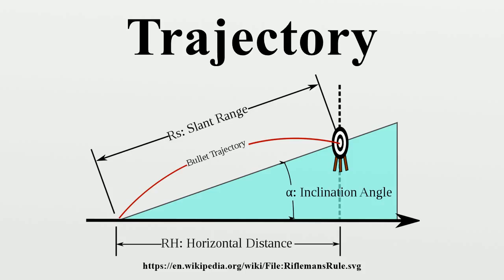A trajectory can be described mathematically either by the geometry of the path or as the position of the object over time. In control theory, a trajectory is a time-ordered set of states of a dynamical system.